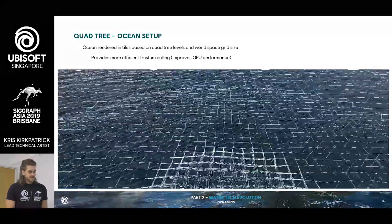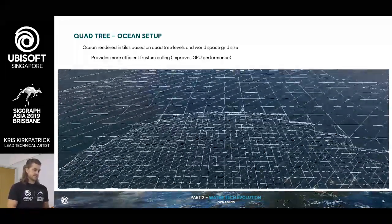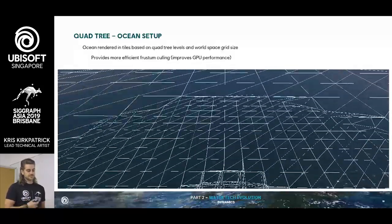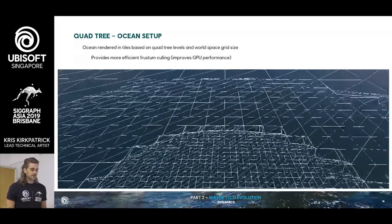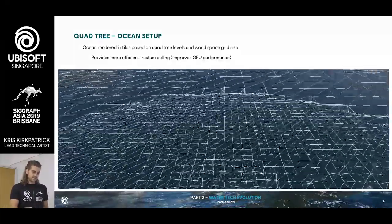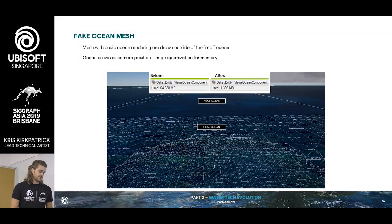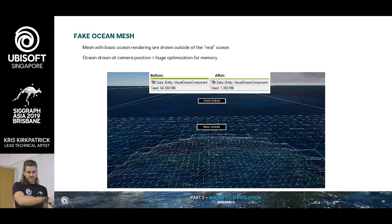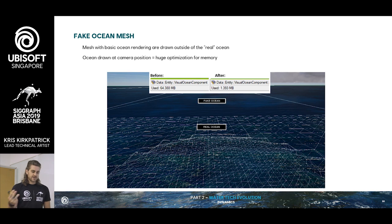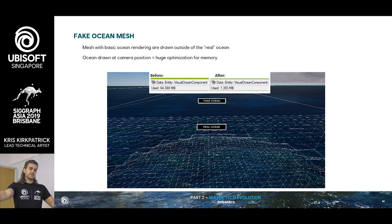Real quick on some of the setup — we use a quad tree. This just allows us to dynamically tessellate the mesh based on distance from the camera, so you get all the polygons where you need them and save where you don't. Another optimization: rather than storing the ocean node data for the entire giant world, we now have the real ocean simulation following the player around, and everything outside of that is just a simple mesh with some basic ocean rendering.